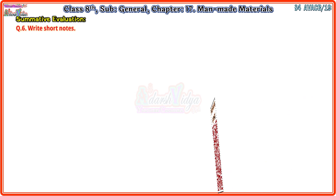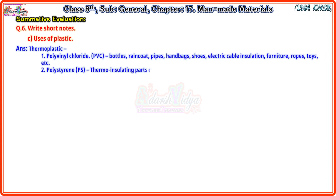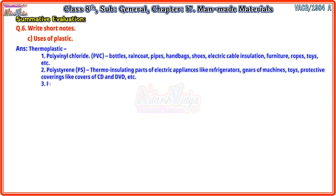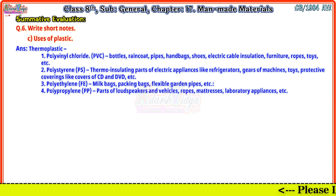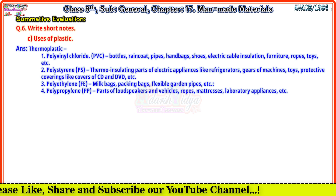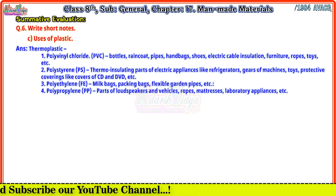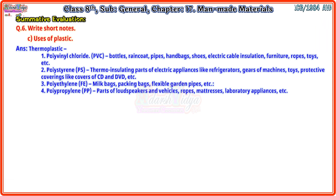Third: Uses of plastic — Thermoplastic. (1) Polyvinyl chloride (PVC): bottles, raincoats, pipes, handbags, shoes, electric cable insulation, furniture, ropes, toys, etc. (2) Polystyrene (PS): thermal insulating parts of electric appliances like refrigerators, gears of machines, toys, protective coverings like covers of CD and DVD, etc. (3) Polyethylene (PE): milk bags, packing bags, flexible garden pipes, etc. (4) Polypropylene (PP): parts of loudspeakers and vehicles, ropes, mattresses, laboratory appliances, etc.